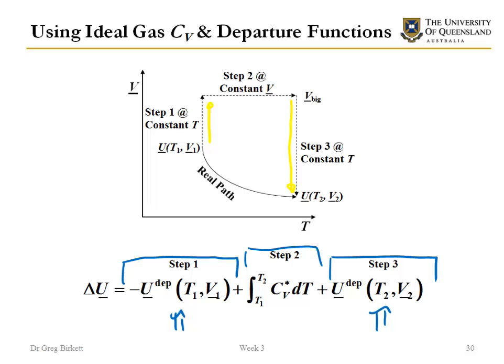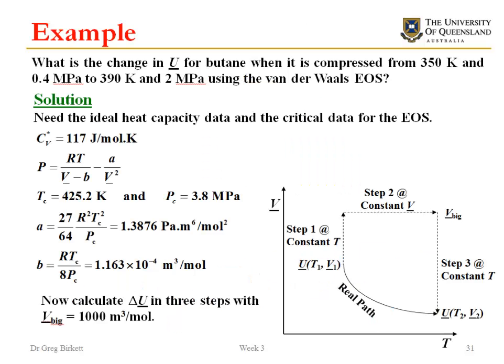So this has been a lot of different equations. What we're going to do now is an example where we use an equation of state to calculate the change in internal energy. The example we're looking at is the change in internal energy for butane as we compress it from 350 K and 0.4 MPa to 390 K and 2 MPa. We want to calculate what the delta U is using the van der Waals equation of state.